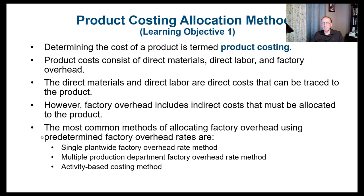Let's understand what we mean by product costing allocation methods. Determining the cost of a product is termed product costing. Product cost consists of three things: direct material, direct labor, and factory overhead.